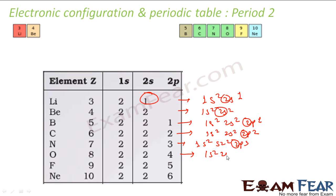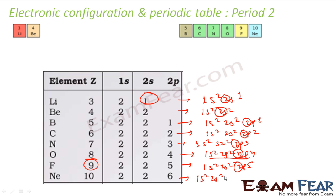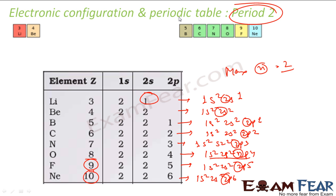For oxygen, the electronic configuration is 1s2, 2s2, 2p4 — maximum value of n is 2. For fluorine, it is 1s2, 2s2, 2p5, atomic number 9 — maximum value of n is 2. For neon, atomic number is 10, configuration is 1s2, 2s2, 2p6 — maximum value of n is 2. So for all these elements, the period is 2.